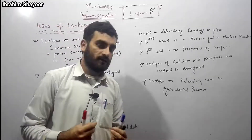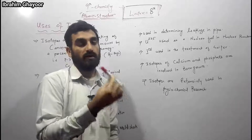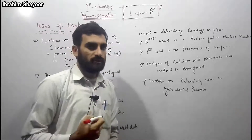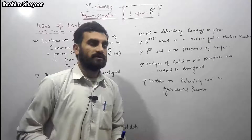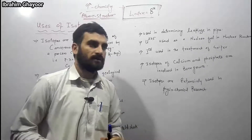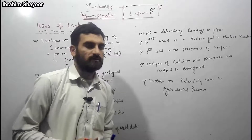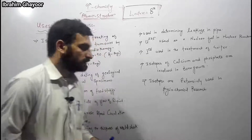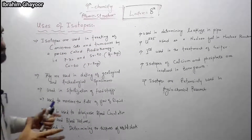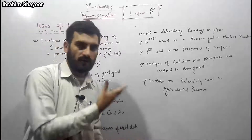An atom is the basic unit of elements. We will discuss atomic number and isotopes. Isotopes have an enormous number of uses; we will mention some of them as given below.